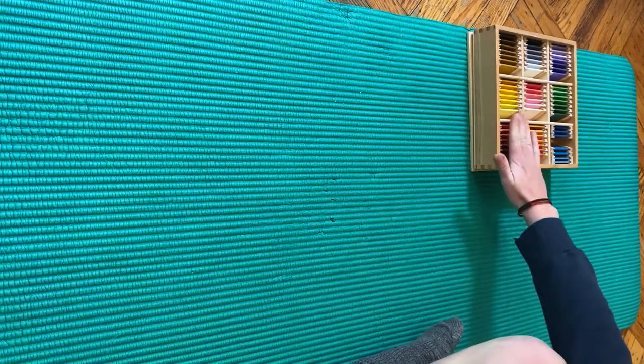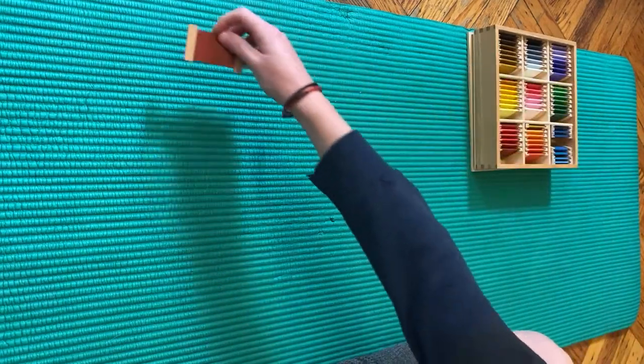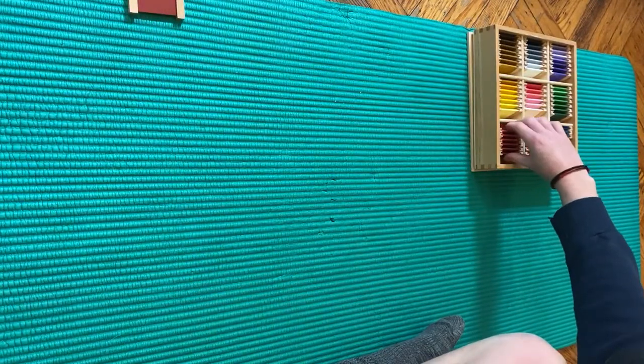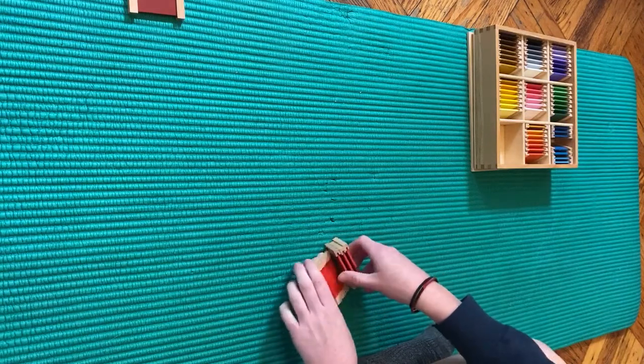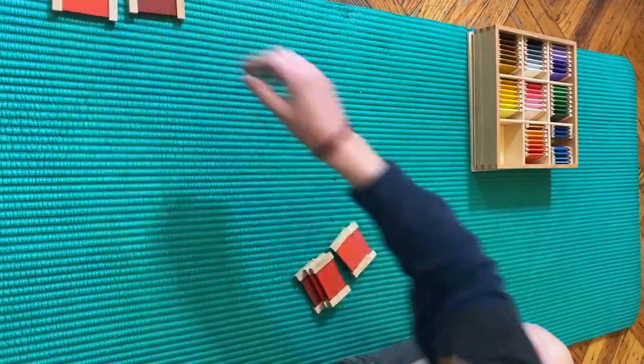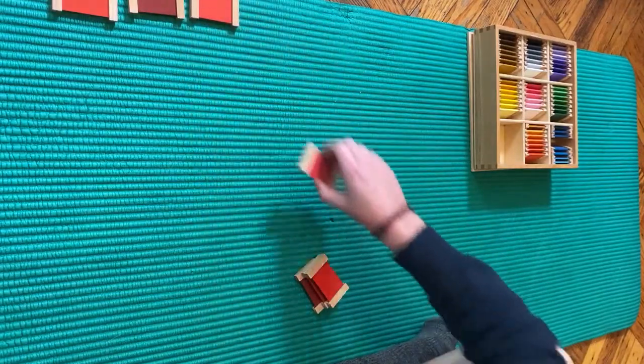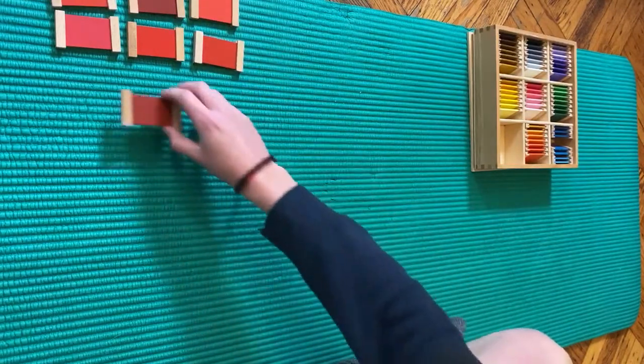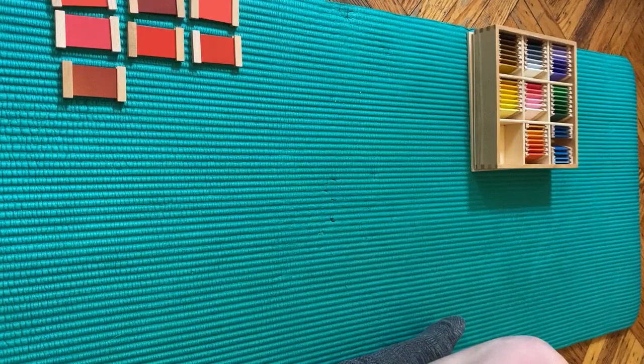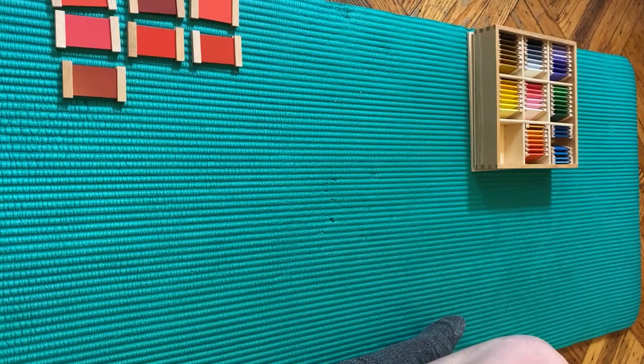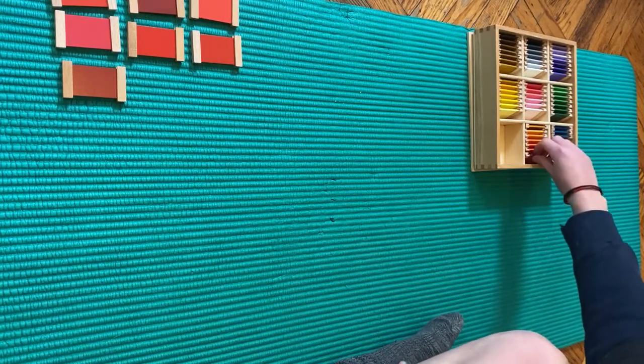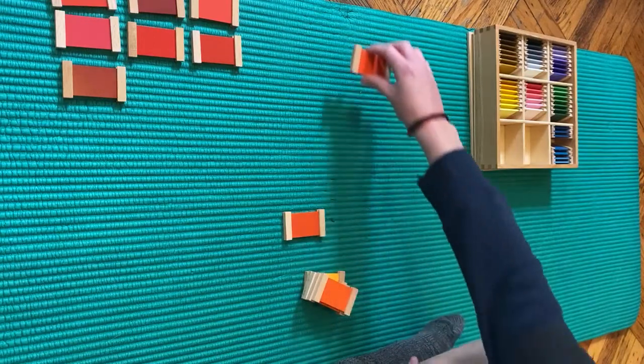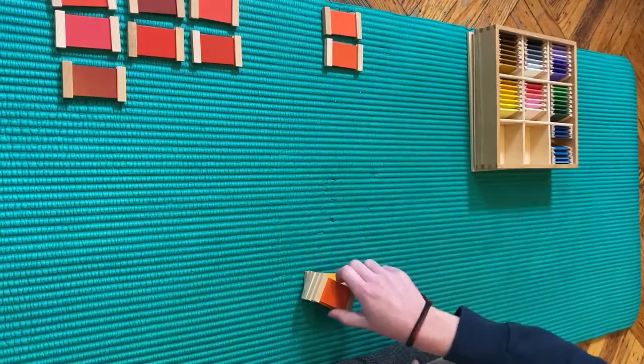The first colors I want to look at are our reds. These are our reds. You can take out all of your reds and group them together. Now let's look at our oranges. These are our oranges. We're going to group them together too.